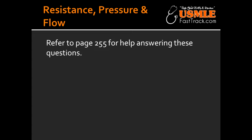In Ohm's law, V stands for volt, I stands for intensity, and R stands for resistance. What is the equation of resistance? Resistance is driving pressure (delta P) over flow (Q), which in turn equals 8 times eta (viscosity) times length, over pi times R to the fourth power.